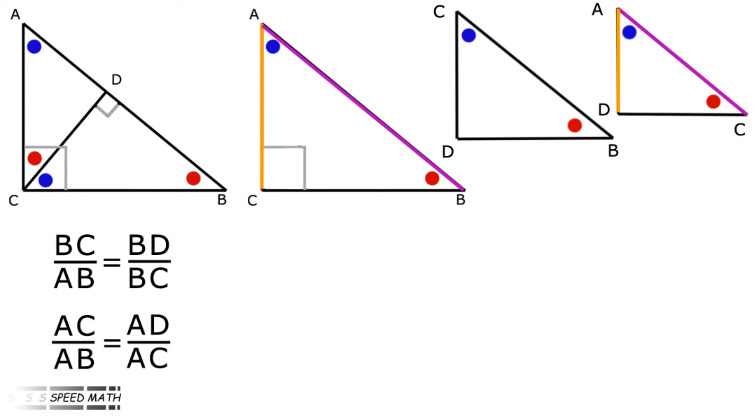Likewise for triangles ABC and ACD, AC over AB on triangle ABC, the ratio of yellow to purple sides equals AD over AC, the ratio of yellow to purple sides on triangle BCD. Looking at the first set of ratios and cross multiplying, we get BC squared equals AB times BD. Repeating for the second set of ratios, AC squared equals AB times AD.